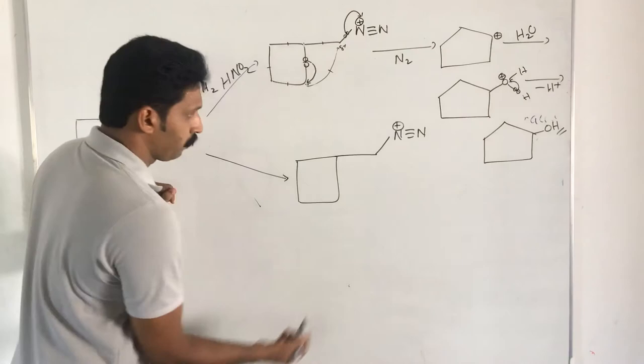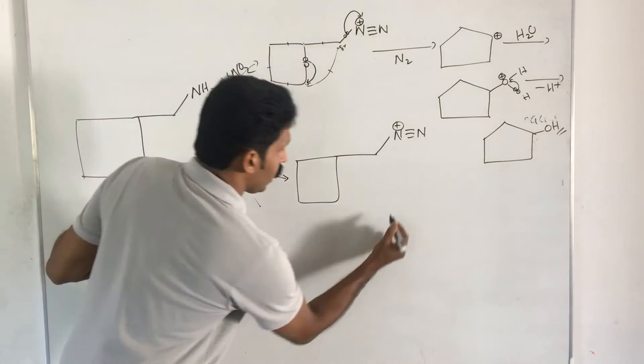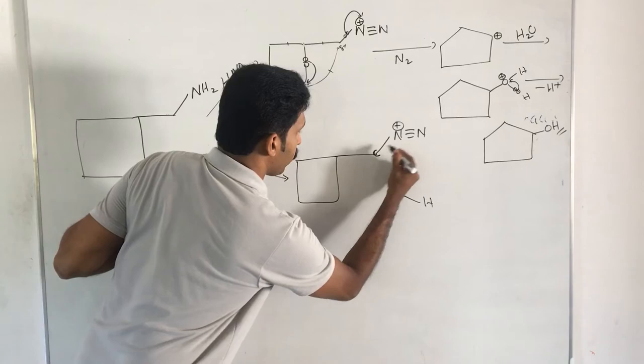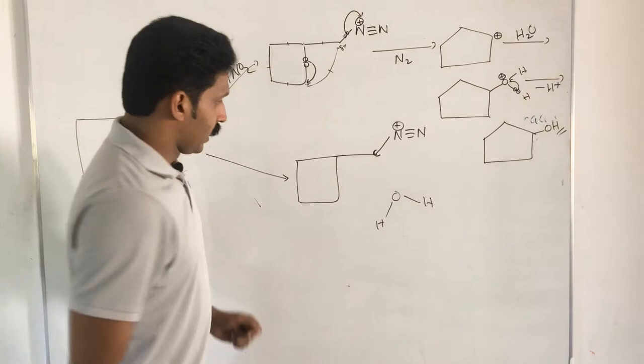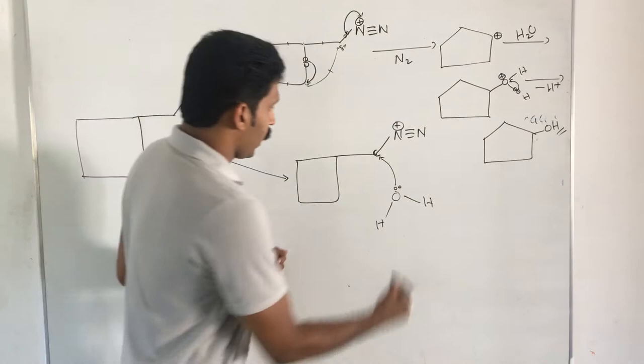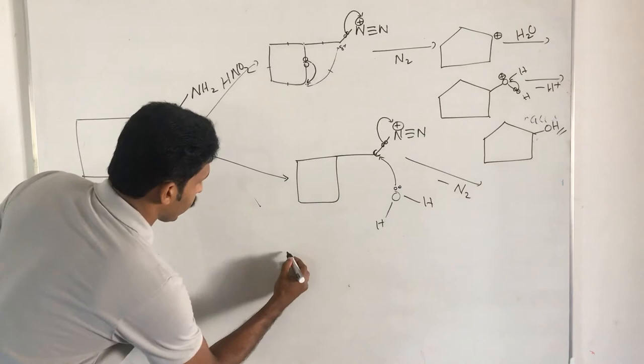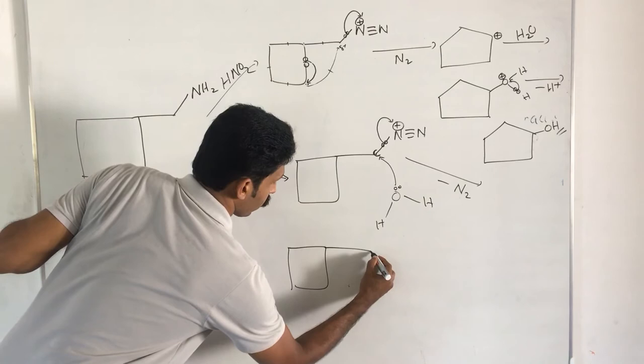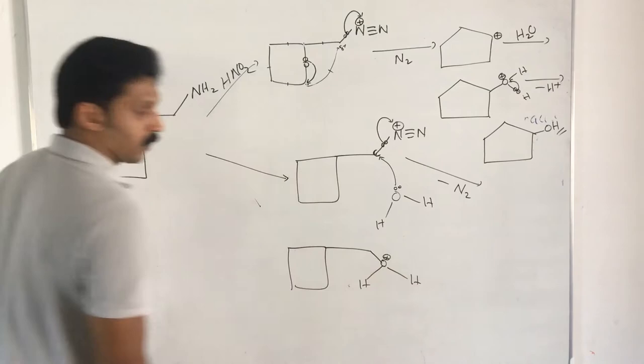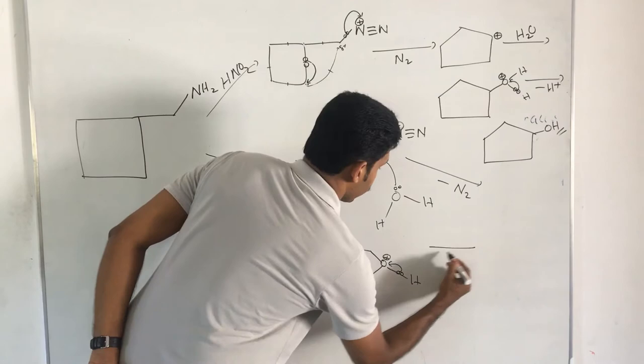In Pathway 2, before removal of the N2 group, the H2O molecule attacks the carbon bearing the N2⁺, just like an SN2 reaction — a bond forms with that carbon. At that time, two electrons shift, N2 gas is evolved, and you get an intermediate with an OH and an oxygen carrying a positive charge.